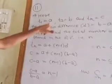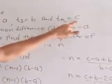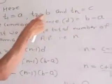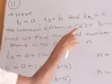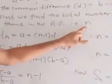Here first term T1 equals A, second term T2 equals B, and last term TN equals C. When we find the common difference — the difference between two consecutive terms — the common difference D equals B minus A. First we find N, the total number of terms in the AP.